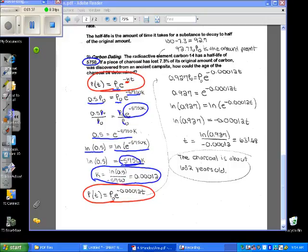Now let's go to the second part of the question here. It says if a piece of charcoal has lost 7.3% of its original amount, that means 92.7% of the original amount is present.